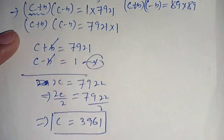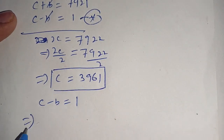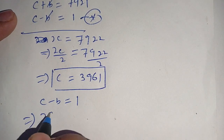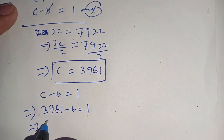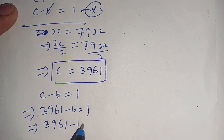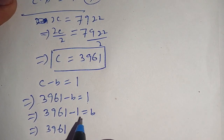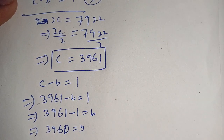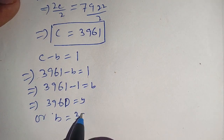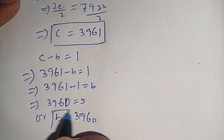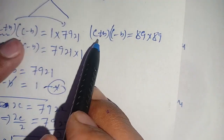Substituting c = 3961 into the equation c − b = 1, we get 3961 − b = 1, which gives 3961 − 1 = b, so b = 3960. Thus we get the values b = 3960 and c = 3961.